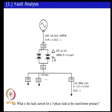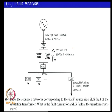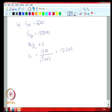In the next problem you are asked to draw the sequence network and find what would happen if you had a single line-to-ground fault on the substation transformer on the primary side. To do this, first you have to get the value of the impedances z-plus and the zero-sequence impedance.